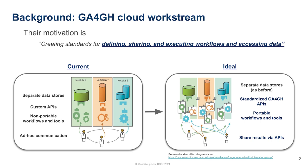The GA4GH Cloud Workstream focuses on bringing the algorithms to the data by creating standards for defining, sharing, and executing portable workflows. Examples of the proposed APIs are the Workflow Execution Service API for executing workflows and the Tool Repository Service API for sharing workflows and tools.